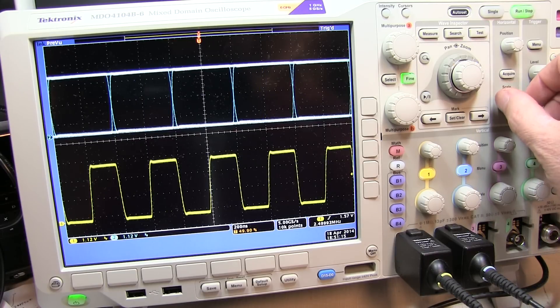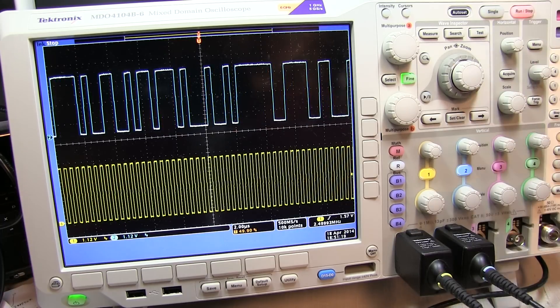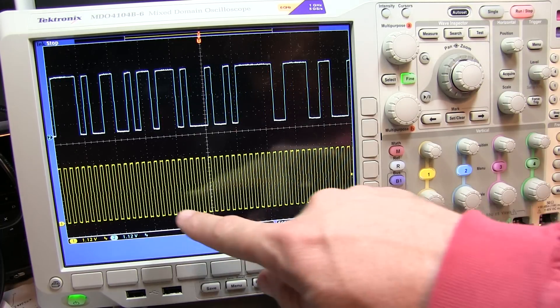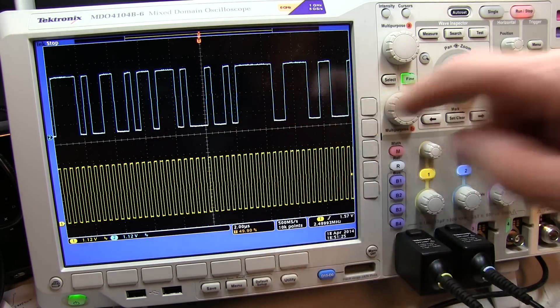If we just slow the time base down on the scope here and do a single shot capture, what we can see is the high speed clock down here and the data pattern right here.